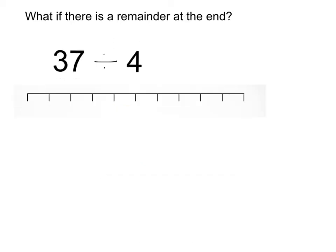The good thing about the bus stop method is even if there is a remainder at the end you can still carry on with the bus stop and you can still find out what the full solution should be. Take this question here, 37 divided by 4.